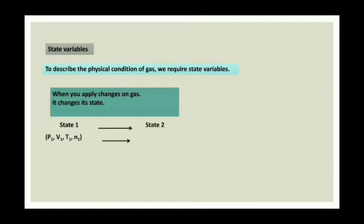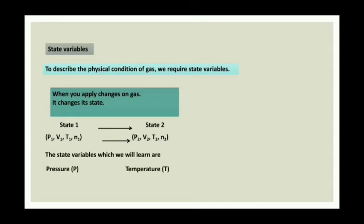You can see that from the change in the variables like pressure, volume, and temperature. Pressure was initially P1, it changes into P2. So these variables which change are what we are calling as state variables: pressure, temperature, volume, and number of moles.